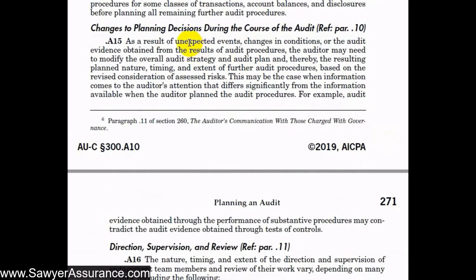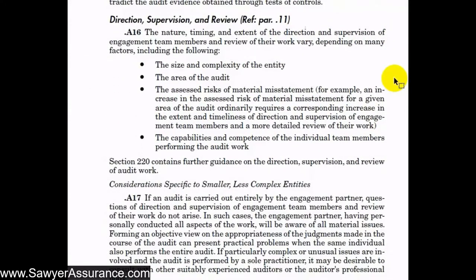Unexpected events, changes in conditions, or the audit evidence we analyzed after obtaining it may tell us we should modify our overall audit strategy and audit plan, resulting in changes to the nature, time, and extent of audit procedures based on risk assessments. In developing the audit plan, we're supposed to set up our planned direction, supervision, and review of the engagement team members. How closely we monitor and supervise them depends on factors including the size and complexity of the entity, the assessed risk of material misstatement, and the capabilities and competence of the individual engagement team members.